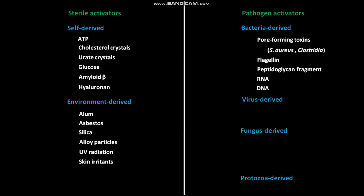The virus-derived activators include RNA and influenza M2 protein. The fungus-derived activators include beta-glucans, mannan, zymosan, and hyphae. The protozoa-derived activators include hemozoin.